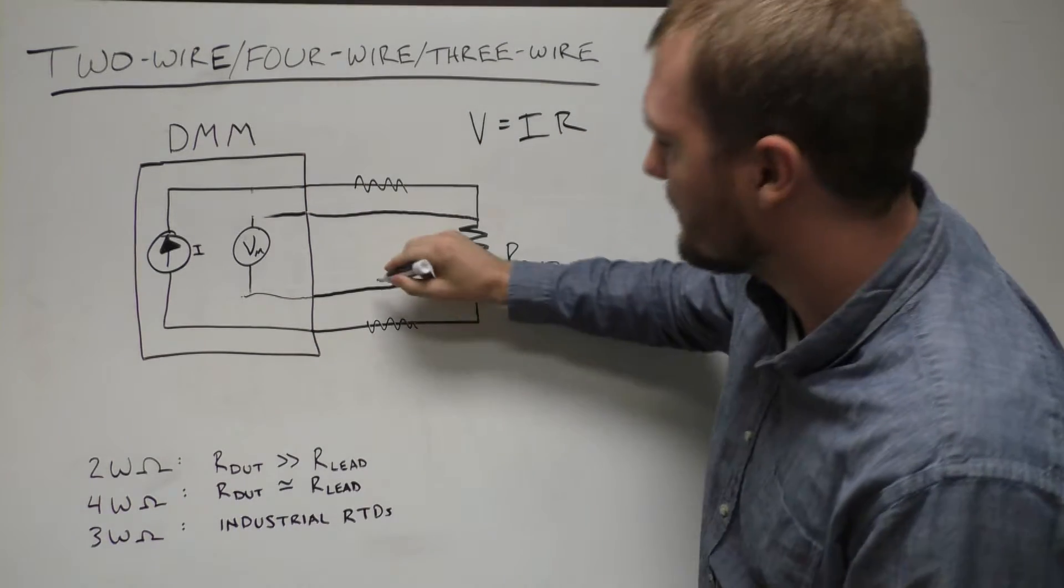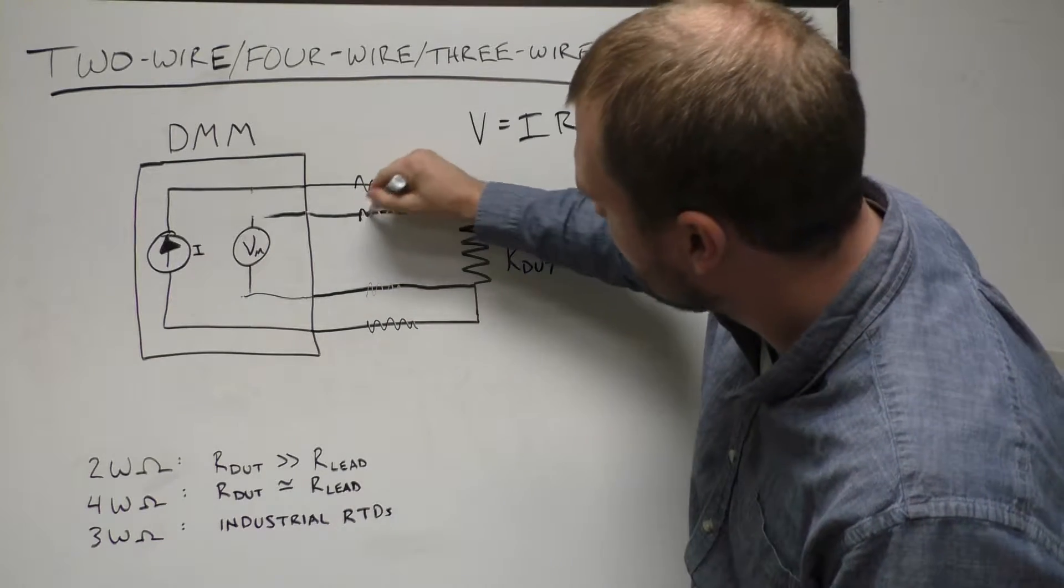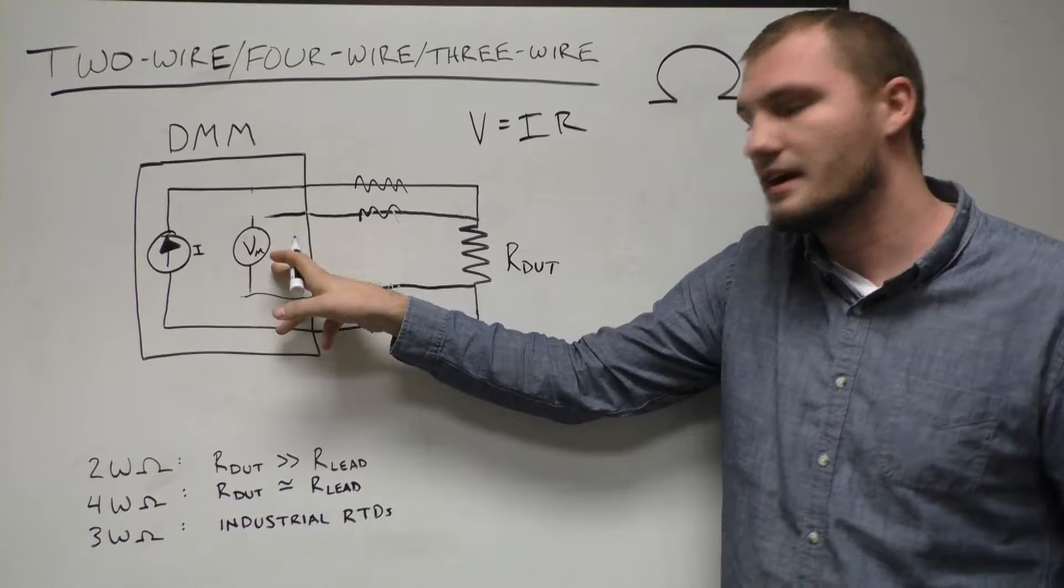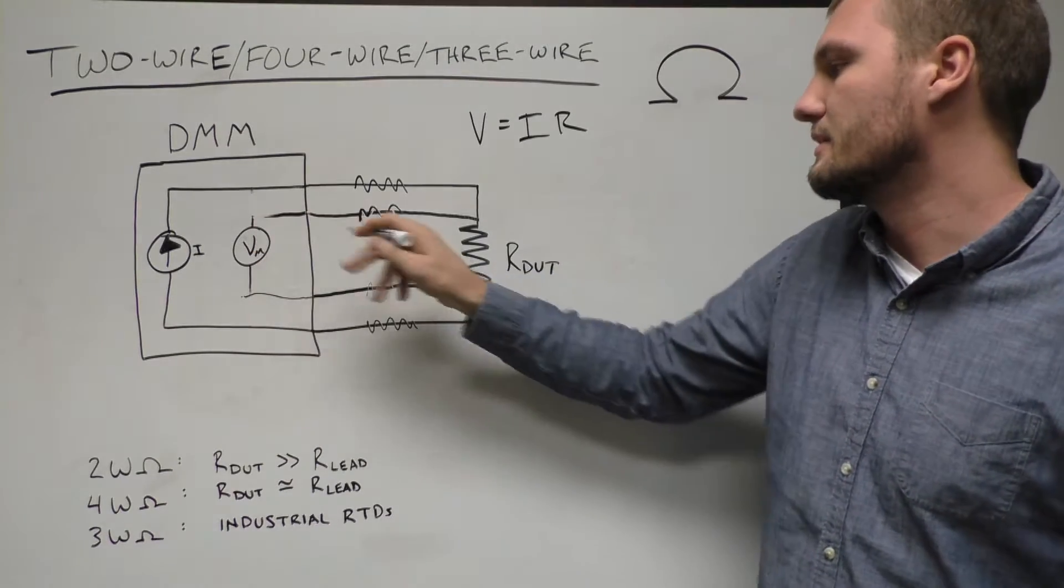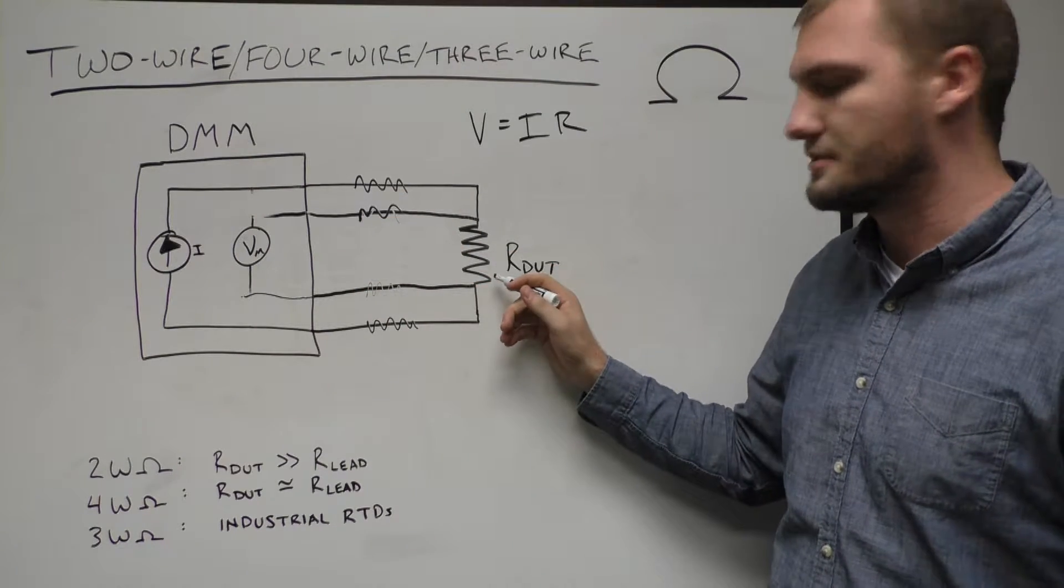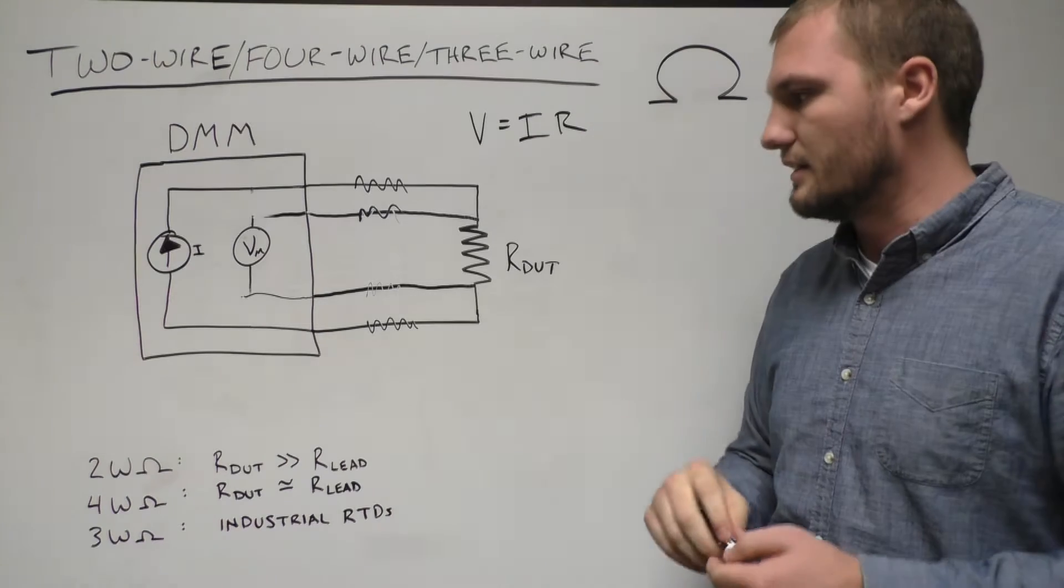Now, these sense leads also have a lead resistance, but because of the very high input impedance of the voltmeter, almost no current goes through here, so there's really no voltage drop. So we're able to measure the voltage across the resistor without any interference from the leads.